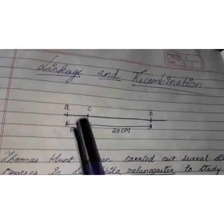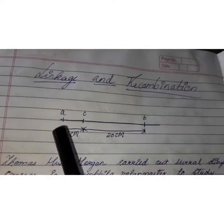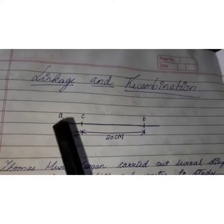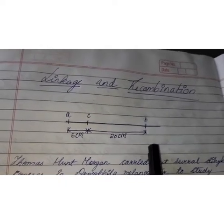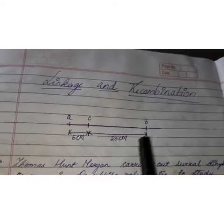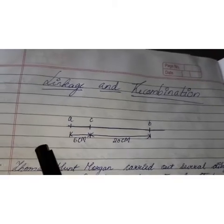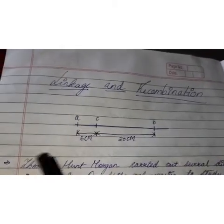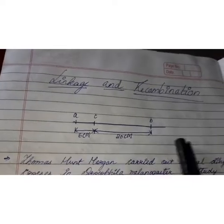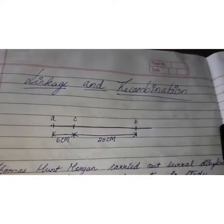Consider this example: suppose this is a chromosome and we have identified three genes — gene A, C, and B. Depending on the distance between A, B, and C, they were located on the chromosome and they were mapped. This is called the genetic map of, say, chromosome number 1.